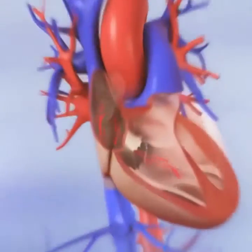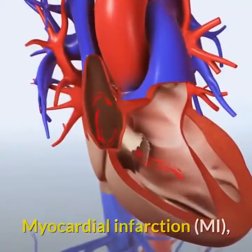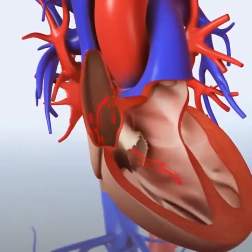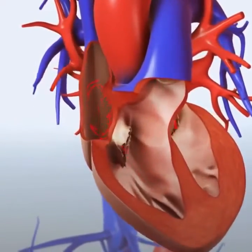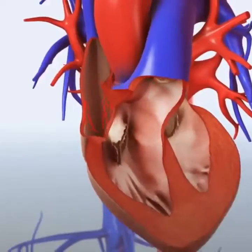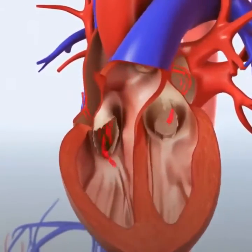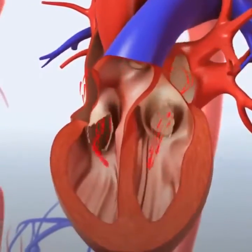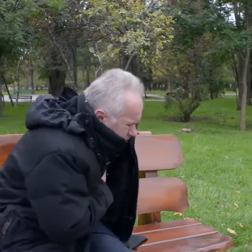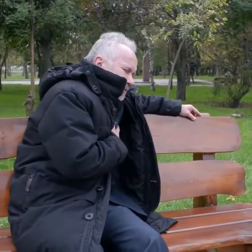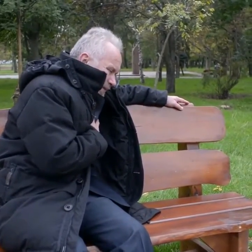A heart attack, also known as myocardial infarction, occurs when blood flow decreases or stops to a part of the heart, causing damage to the heart muscle. The most common symptom is chest pain or discomfort, which may travel into the shoulder, arm, back, neck, or jaw. It often occurs in the center or left side of the chest.